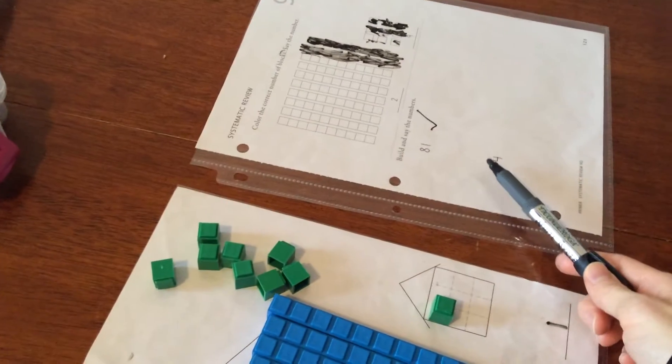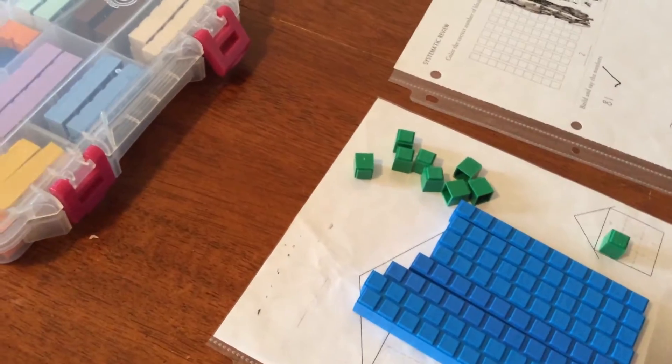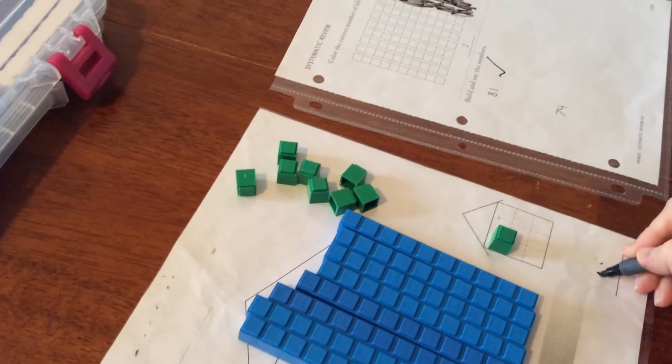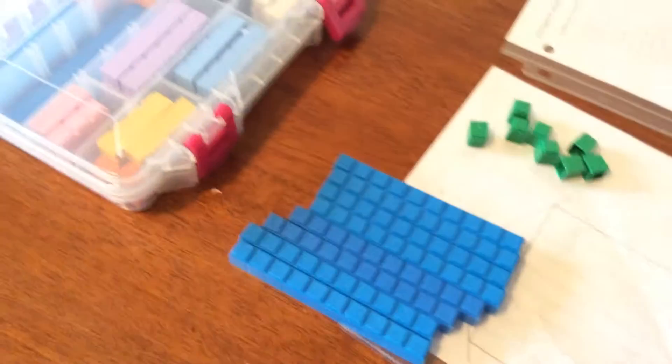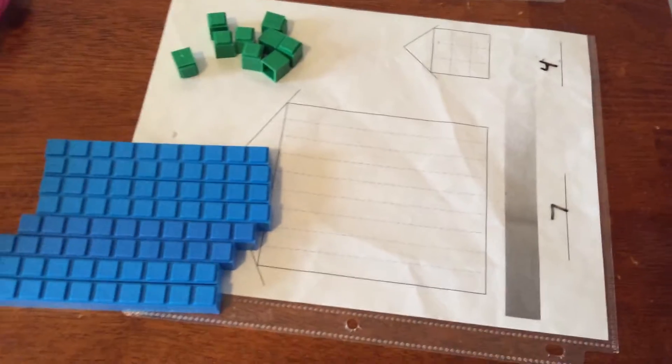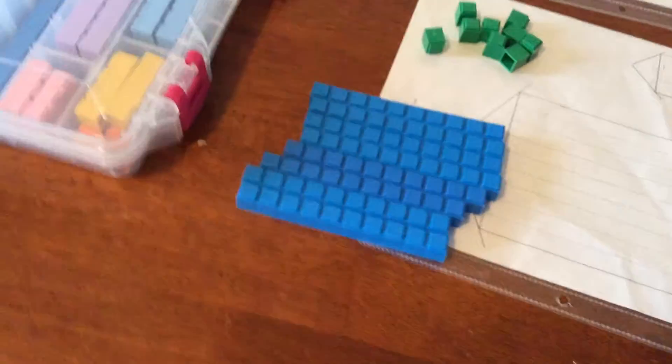Alright, now what's this number here? 74. 74. Good job. Let's change this to 74. Can you show me that on your chart here? On Decimal Street. Show me that on Decimal Street.